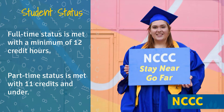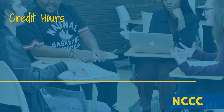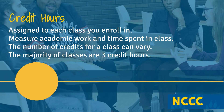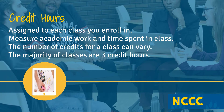Credit hours are assigned to each course you enroll in. These credits measure academic work and time spent meeting each week. Typical courses are three credit hours each, so to be a full-time student you would need to be in the equivalent of four three-credit-hour courses to meet the minimum 12 credit hours needed to be considered full-time.